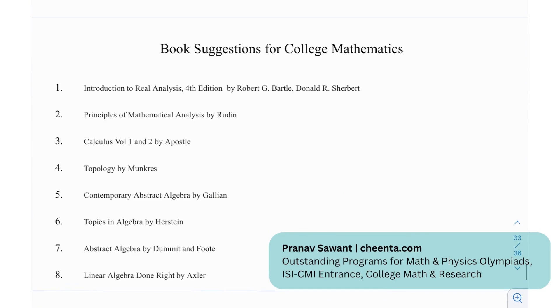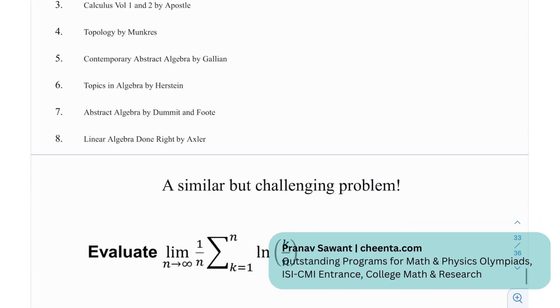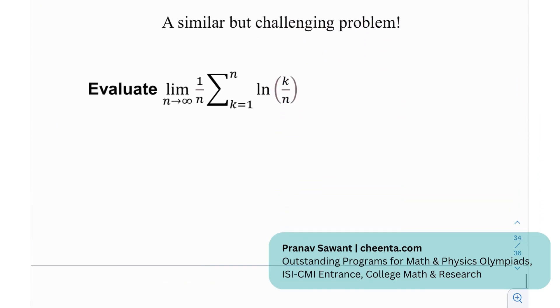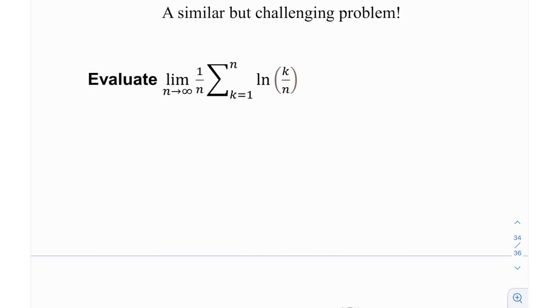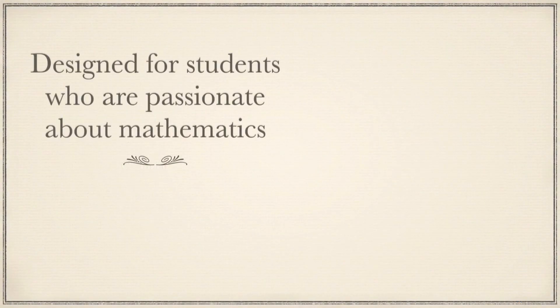Moving on — book sessions for college mathematics: Introduction to Real Analysis, Principles of Mathematical Analysis by Rudin, Calculus Volume 1 and Volume 2 by Apostle, Topology, Contemporary Abstract Algebra by Gallian, Topics in Algebra by Herstein, Abstract Algebra by Dummit, and Linear Algebra Done Right by Axler. At the end, there's a similar challenging problem — try it out, and if you're able to do it, let me know. Until then, I'll see you in the next video.